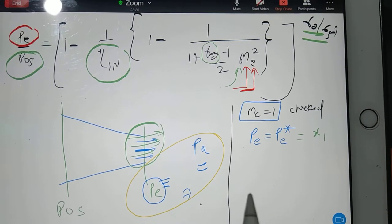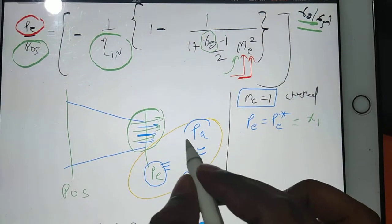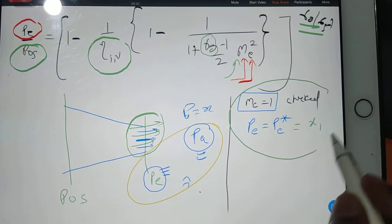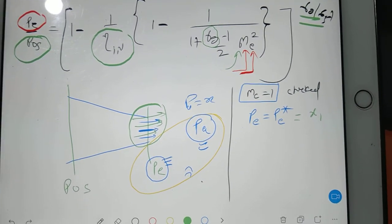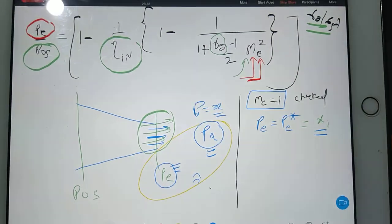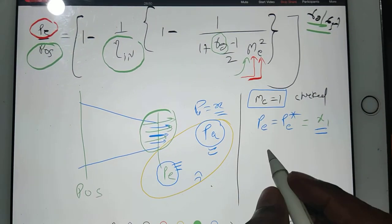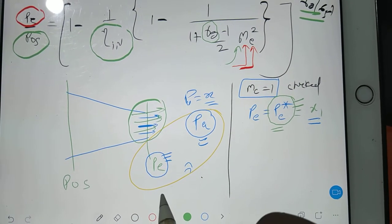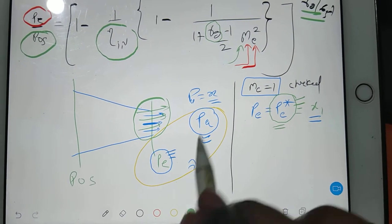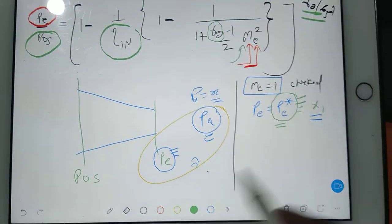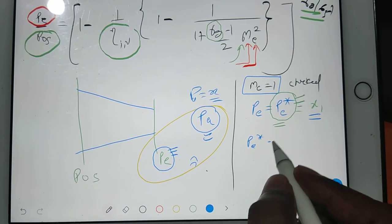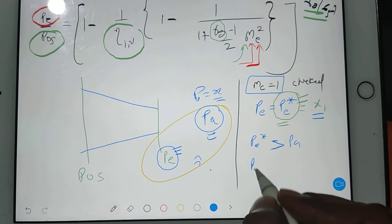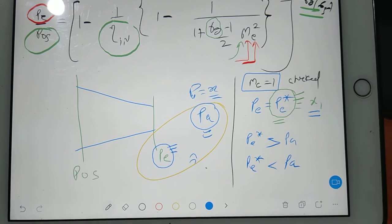Suppose you got x1 value, and suppose your pa is equal to x. This part you have to do in every question: theoretically you compare x1 with x. I mean to say that this p star, whatever you have got, this is your theoretical value, not the real value. So you just find out and compare: is your p star value more than pa or less than pa? This part you have to understand.